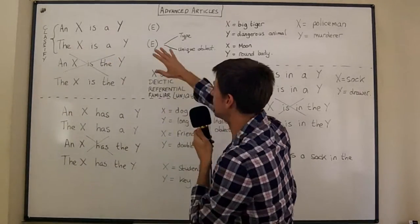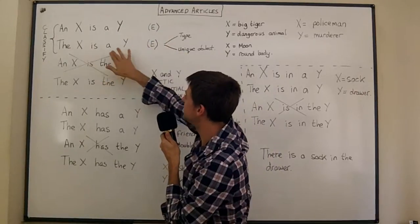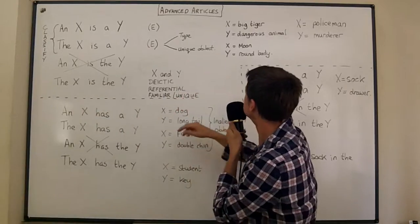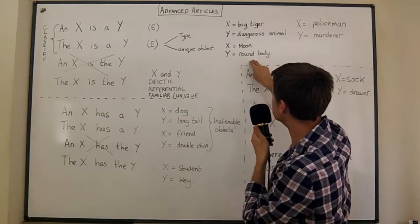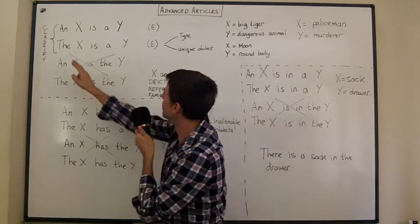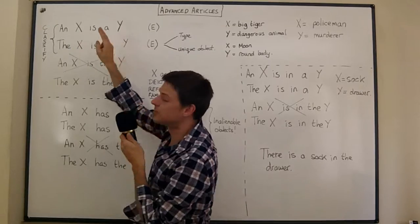It sounds quite poetic to me and I think we would normally change it to this. Anyway let's start with an X is a Y and the X is a Y and an X is the Y and the X is the Y. Now let's take moon and round body. First of all moon is X and let Y be round body.